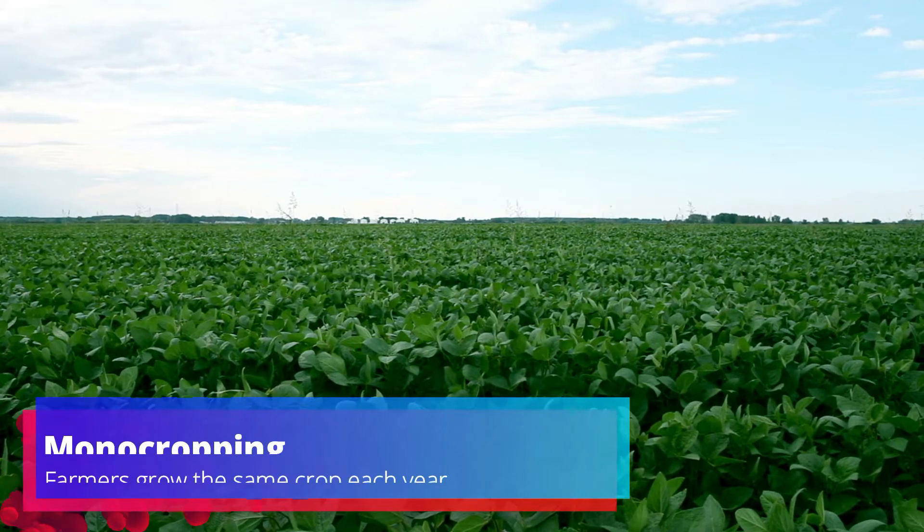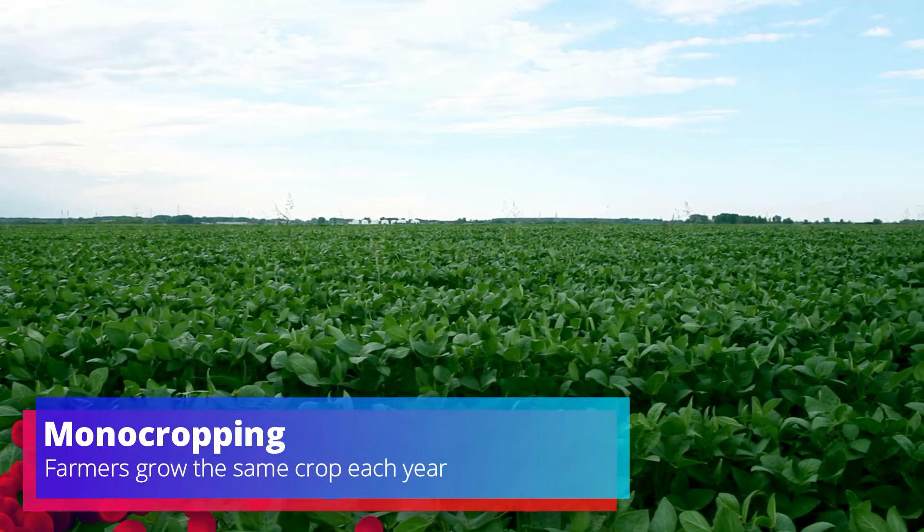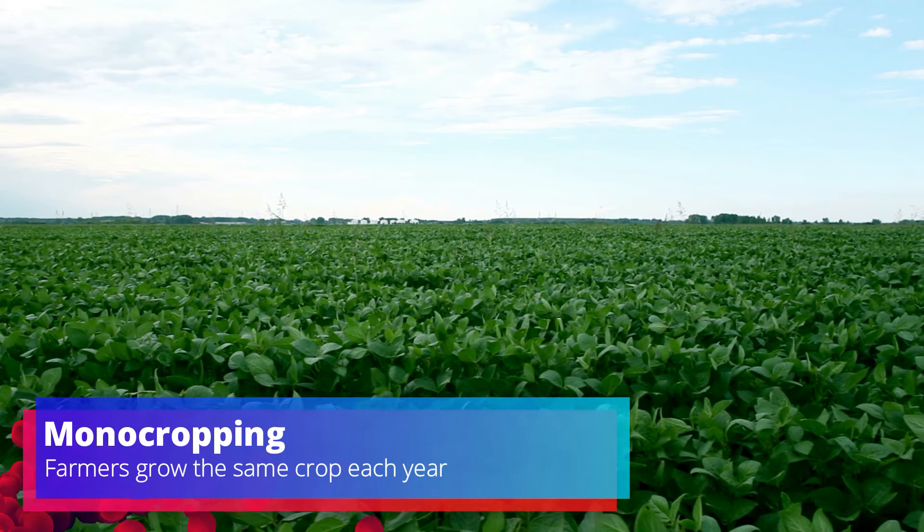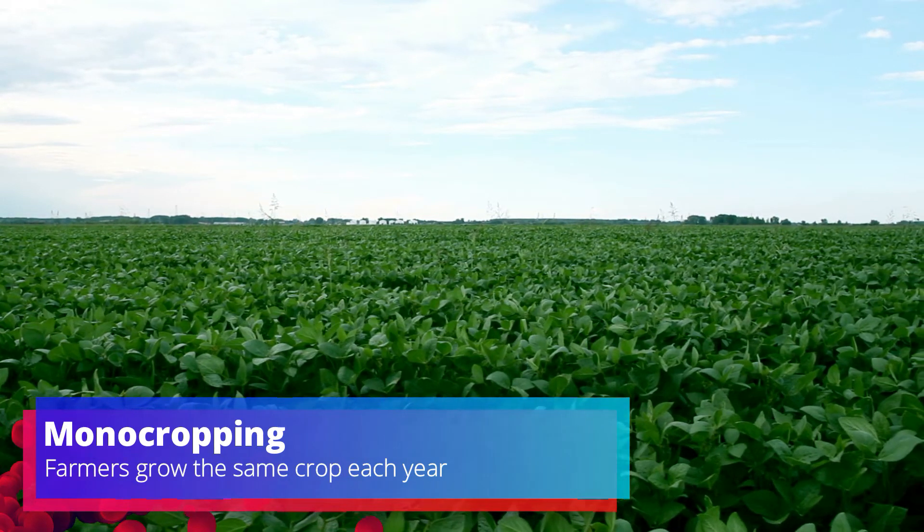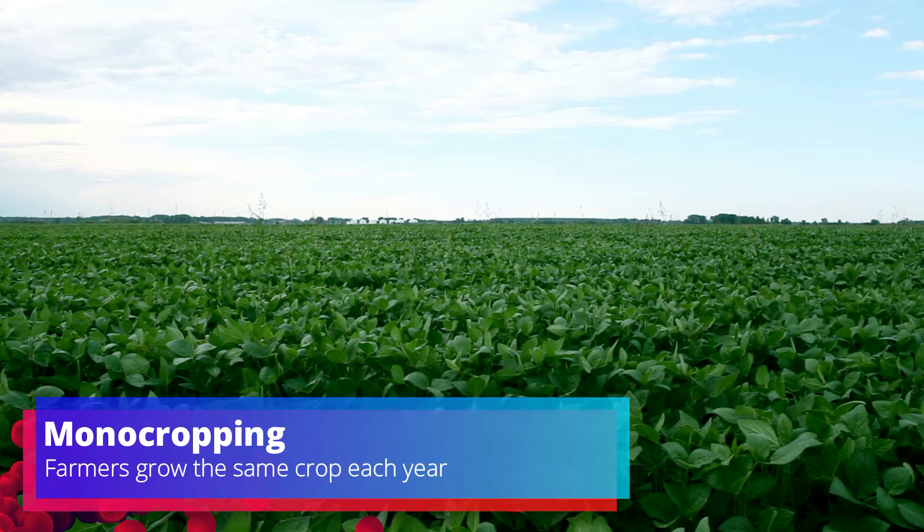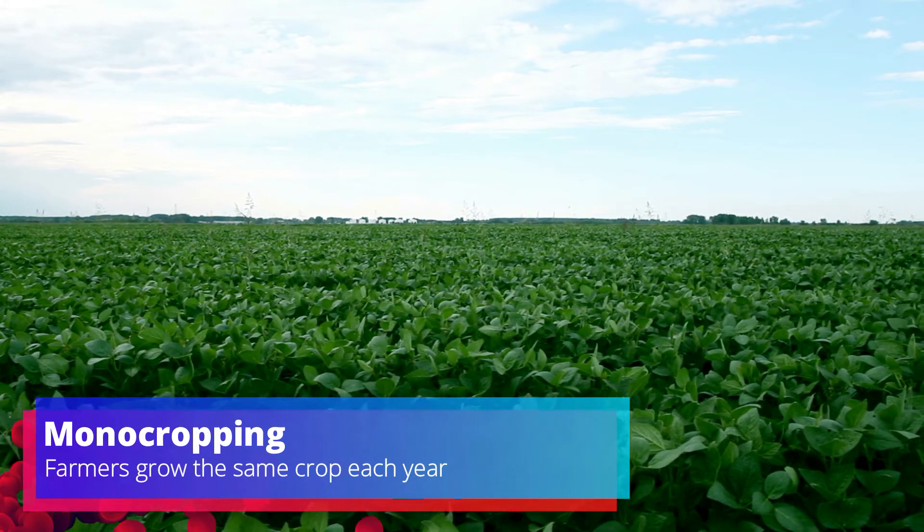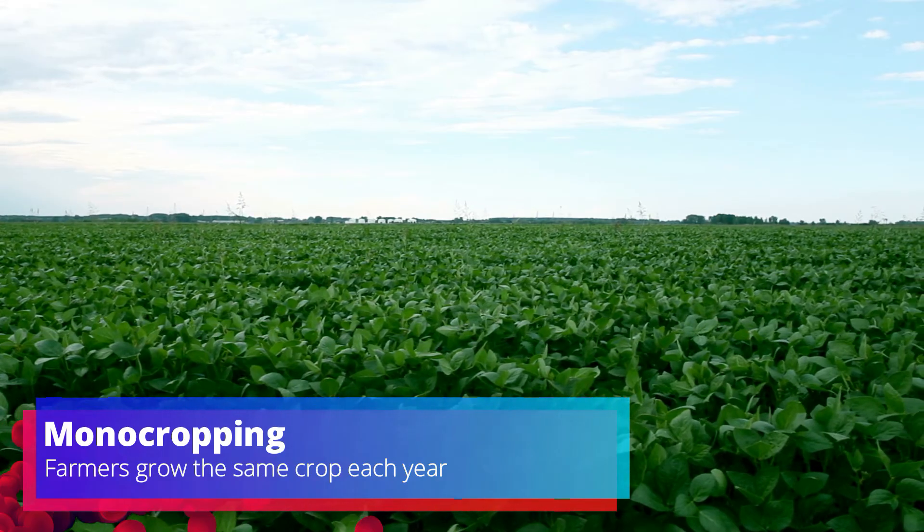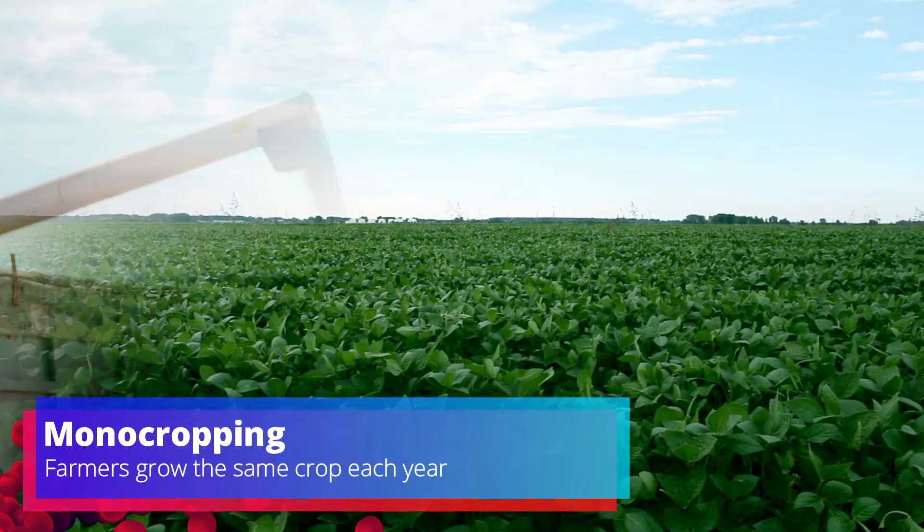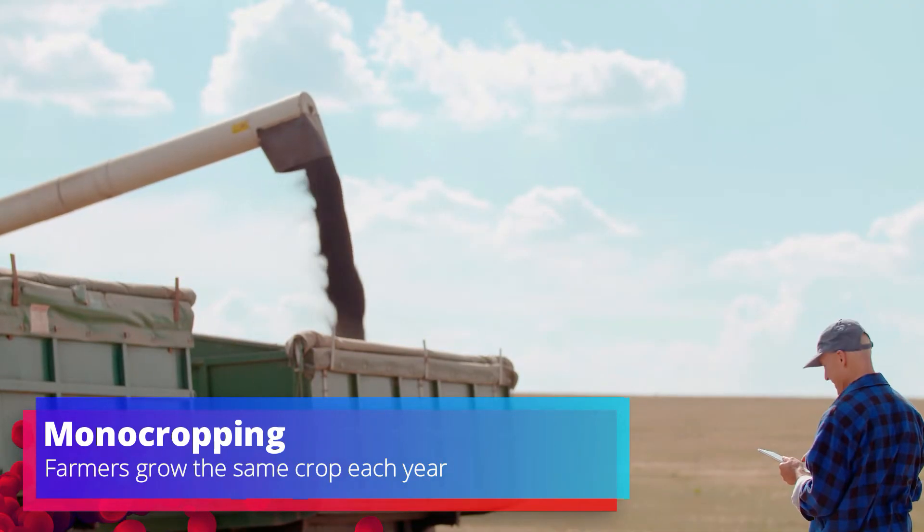I want to cover monocropping and monoculture. Monocropping is when farmers grow the same crop each year. They continue to plant the same species of crop year after year. Farmers who practice monocropping risk soil depletion due to the lack of crop rotation. However, today we are seeing more and more farms use monocropping.